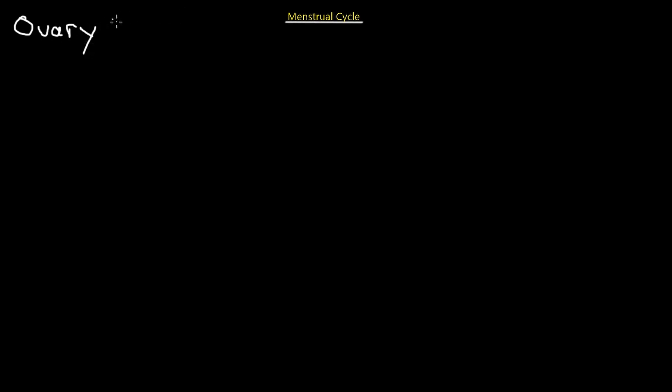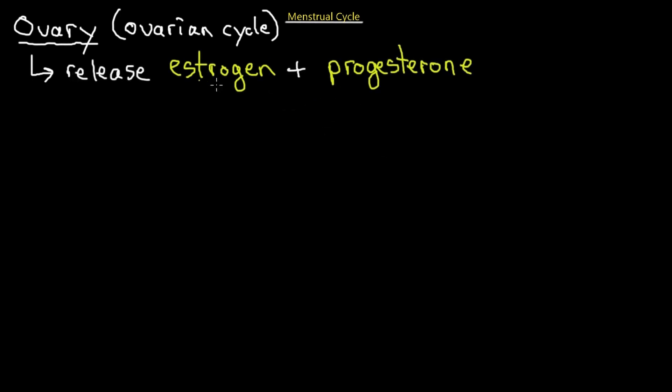In terms of the menstrual cycle, that's typically known as the period — the 28 days of the female cycle that undergoes changes in its reproductive organs. The organs and hormones involved include the ovary, which has its own ovarian cycle and releases estrogen and progesterone. These hormones regulate the ovarian cycle and the uterine cycle.